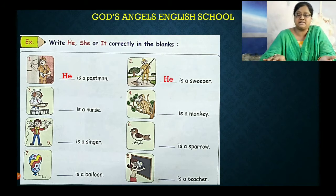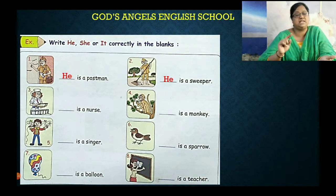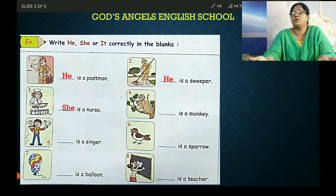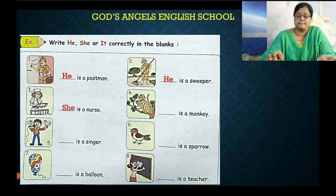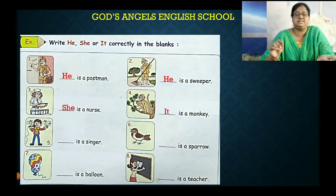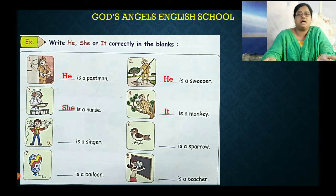ठीके, second वाला देखो — he is also a man. A girl — girl और woman को क्या use करना है? She. She is a nurse. Animal, thing — animals, things, और birds को क्या use करना है? It. It is a monkey.